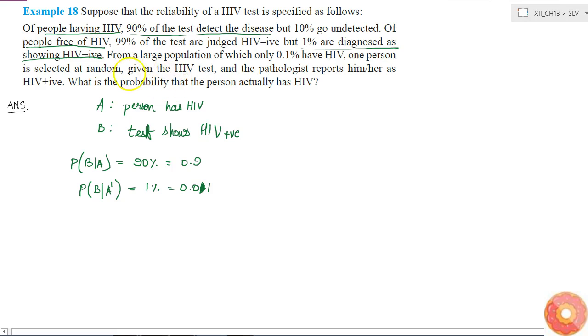The next statement tells us: from a large population of which only 0.1% have HIV. This means this is the actual value. Therefore, probability of selecting a person actually having HIV is probability of A.